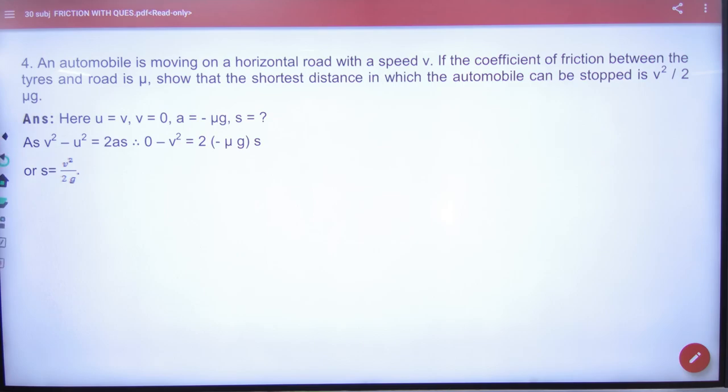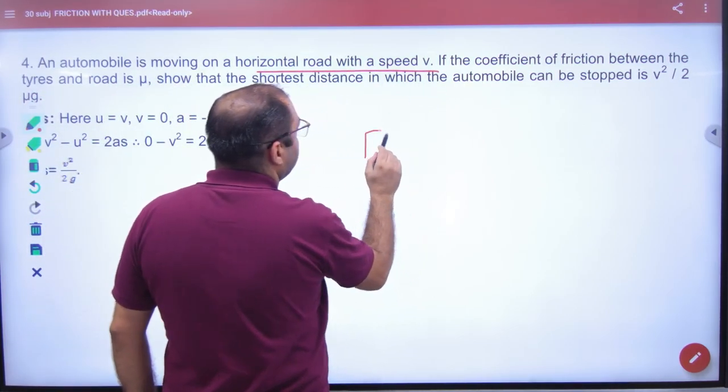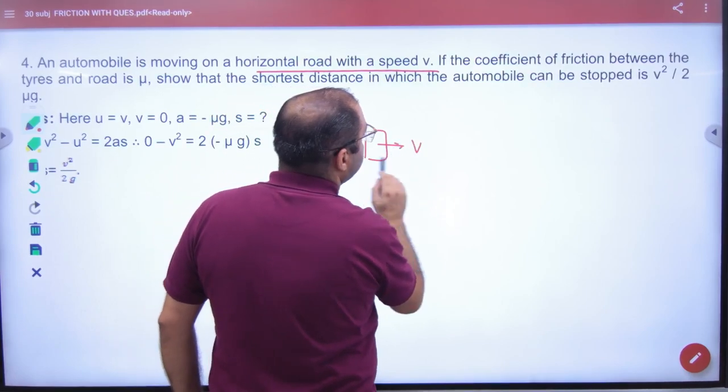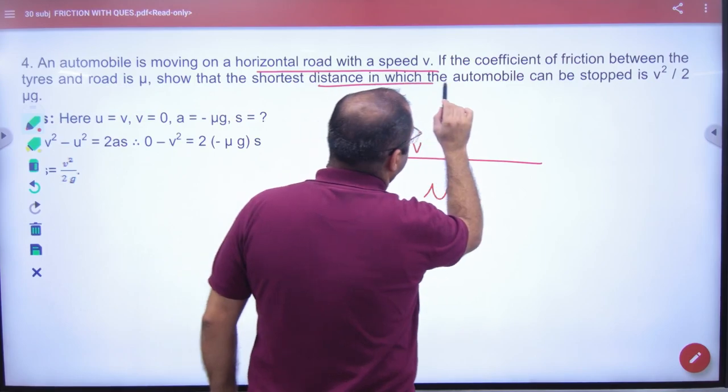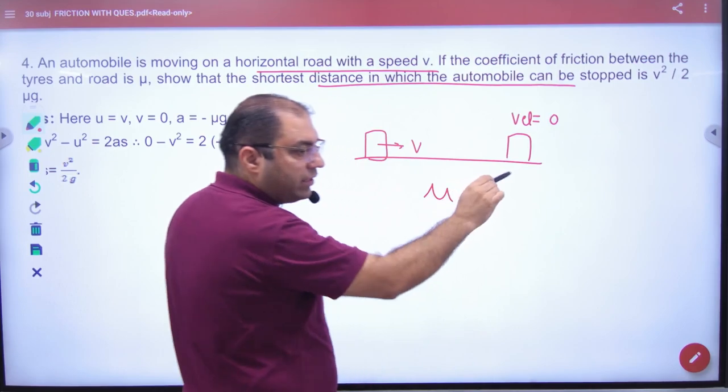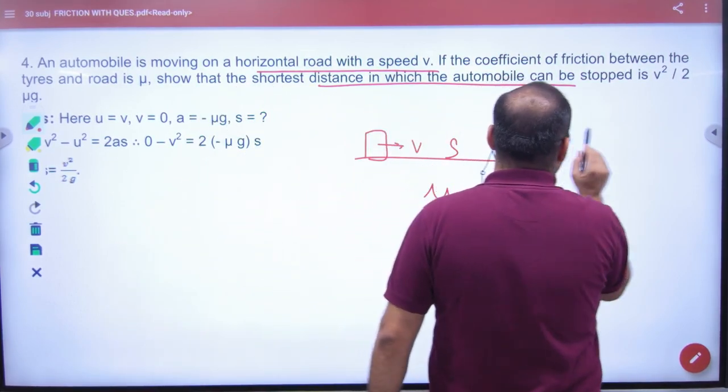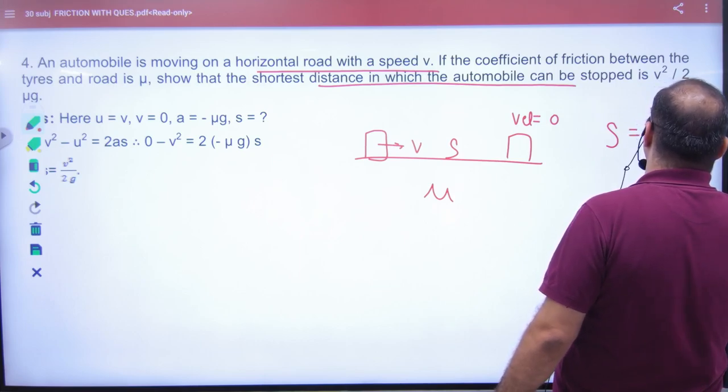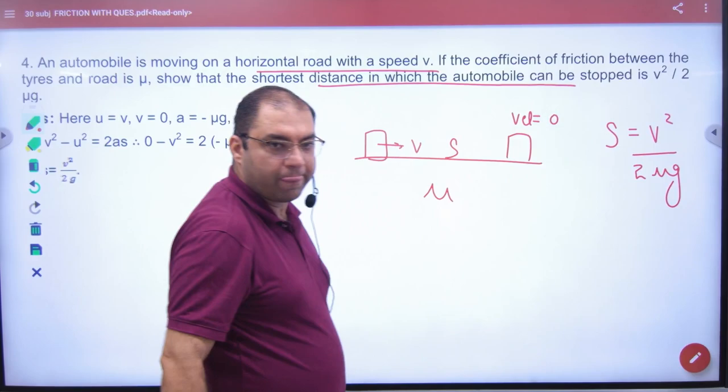Question 4: An automobile is moving on a horizontal road with speed v. The coefficient of friction is μ. Show that the shortest distance in which the automobile can be stopped, yani ki final velocity zero, with retardation, is v² divided by 2μg. This is what you have to prove.